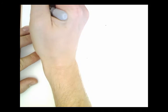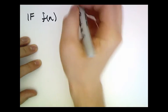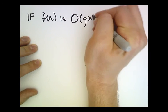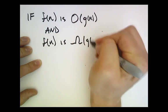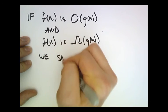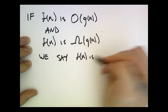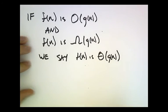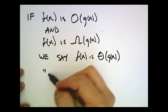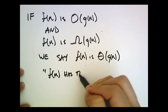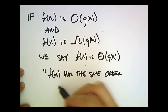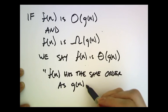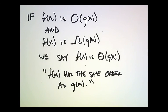Finally, very briefly: if f of n is big O of g of n and f of n is big Omega of g of n, then we say that f of n is big Theta of g of n. This is also often said as f of n has the same order as g of n, or is of the same order as g of n. We'll talk more about this in class.